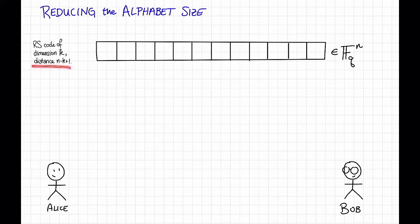So let's say that they're going to use some Reed-Solomon code of dimension k and distance n minus k plus 1 over an alphabet size q, where q is at least n.